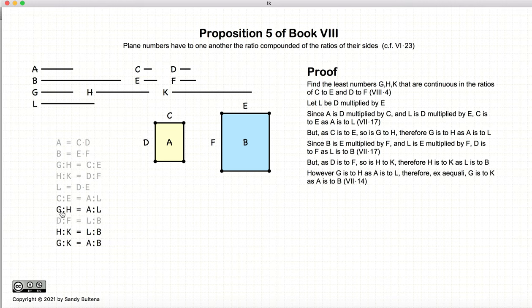So, now we have that G to H equals A to L, and H to K is equal to L to B. And again, if we cross out the Ls and cross out the Hs, we have that G to K is equal to A to B.